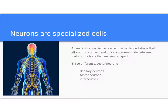Globally, we can think about three different types of neurons: sensory neurons, which bring in information from the outside; motor neurons, which control muscles; and then everything else is an interneuron — they communicate between other neurons of the nervous system.